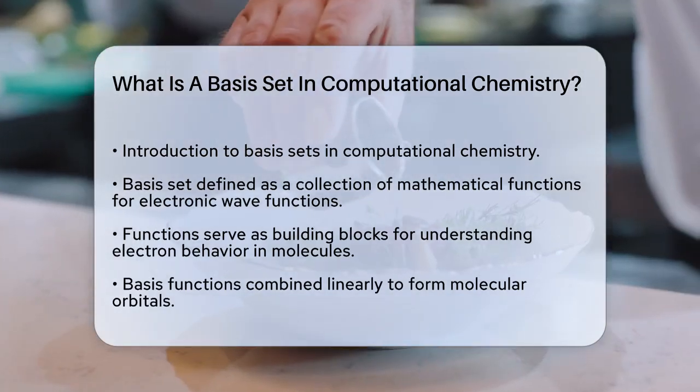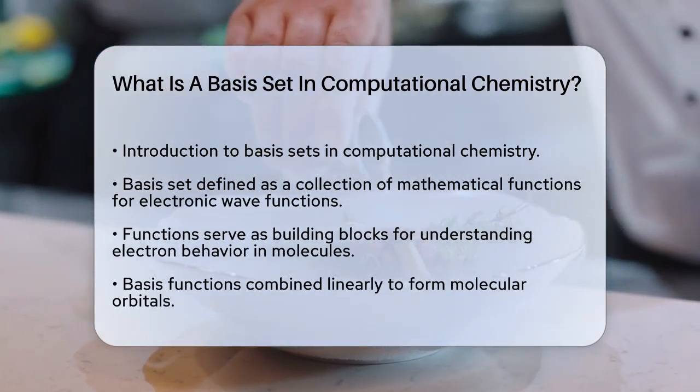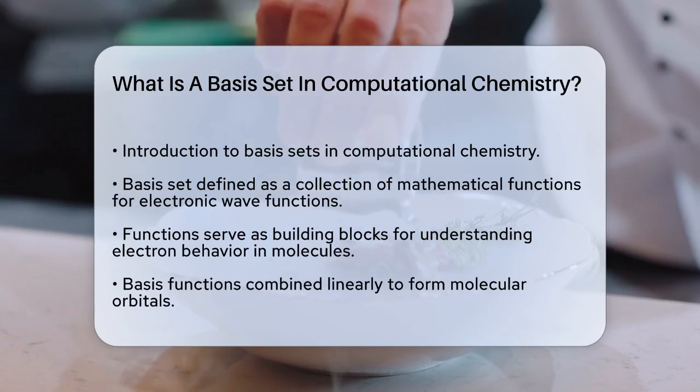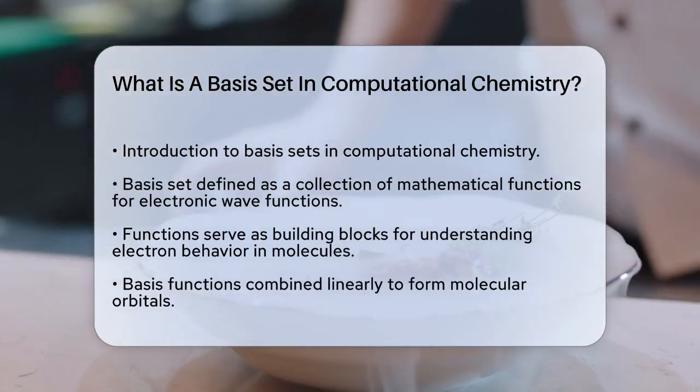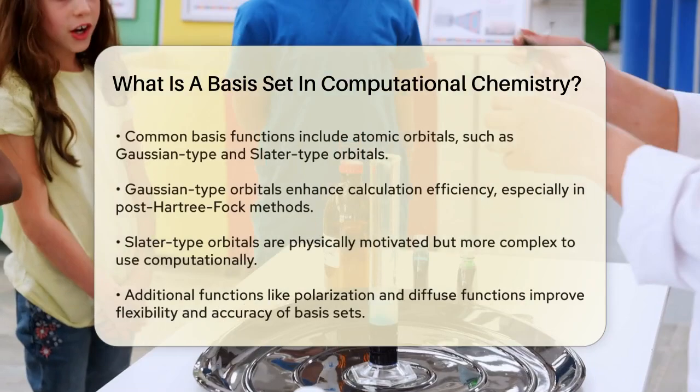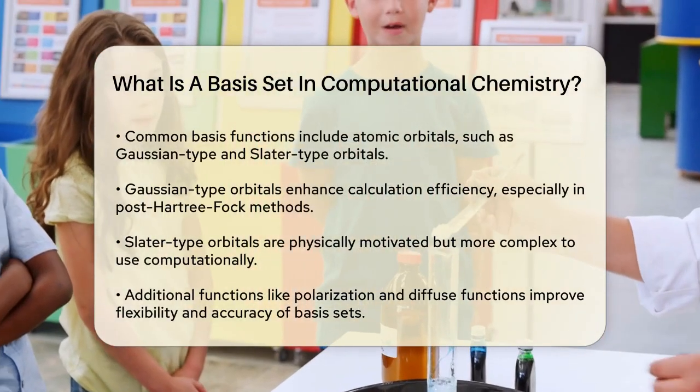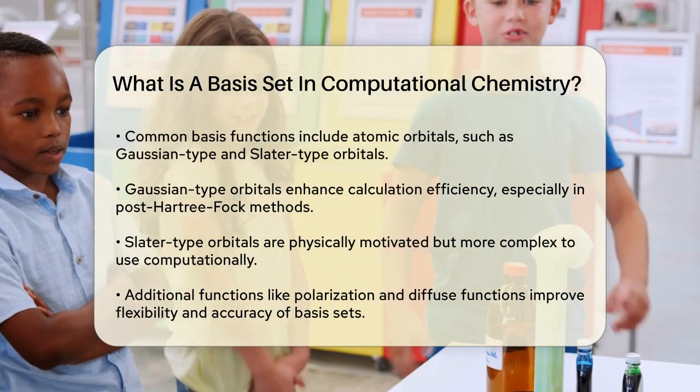The most common type of basis functions are atomic orbitals, which are centered on the atoms within the molecule. For example, you might use Gaussian-type orbitals, Slater-type orbitals, or even numerical atomic orbitals, each with its own strengths and weaknesses.